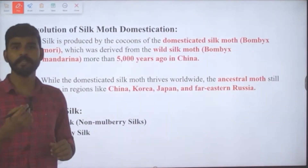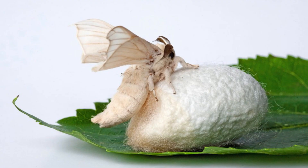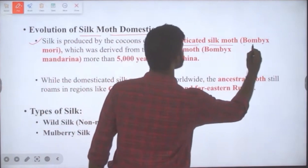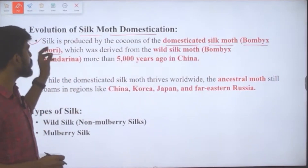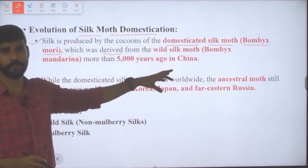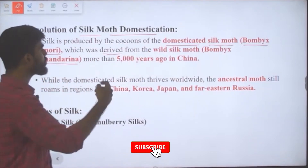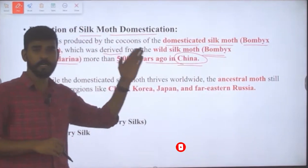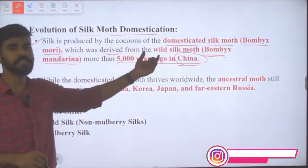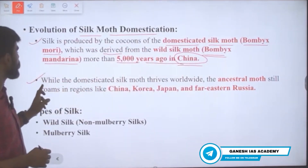Regarding the evolution of silk moth domestication: silk is produced by the cocoons of the domesticated silk moth, Bombyx mori. This domesticated silk moth is derived from the wild silk moth Bombyx mandarina, and this domestication occurred more than 5,000 years ago in China.